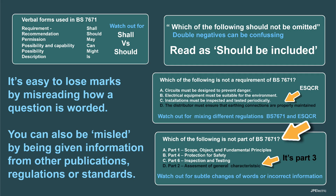Again, which of the following is not part of BS 7671? A, B, C and D — they're all correct. Assessment of general characteristics is not part 2; it's part 3. So they can be a little bit sneaky with the wording. I presume they do it to see that you're concentrating and reading the question. They can change things very subtly — you know the answer, but it's easy to muck it up.